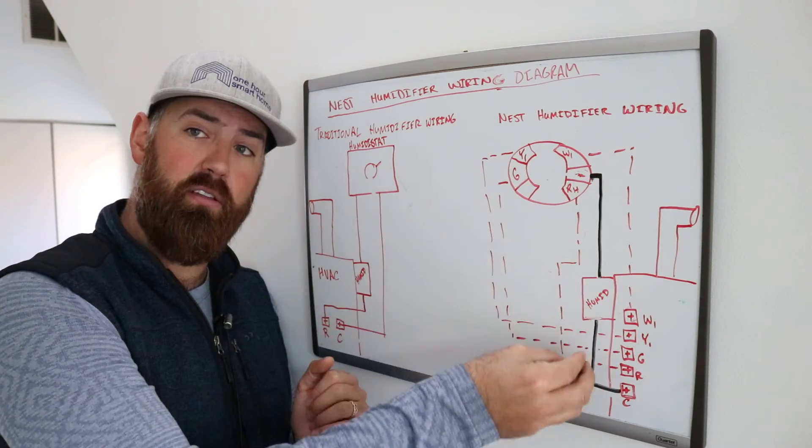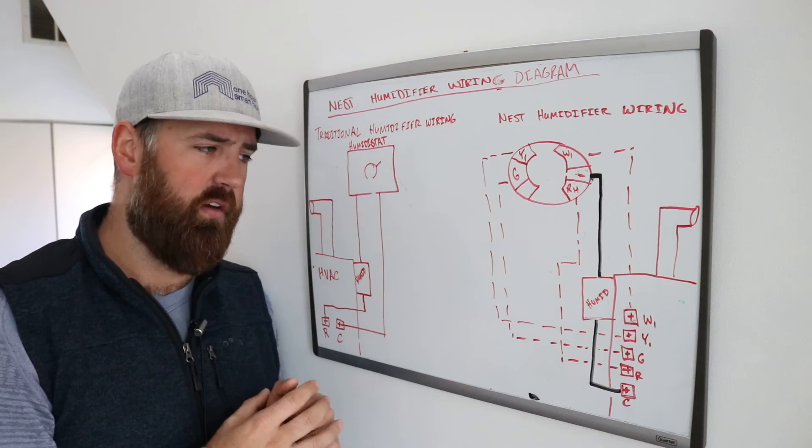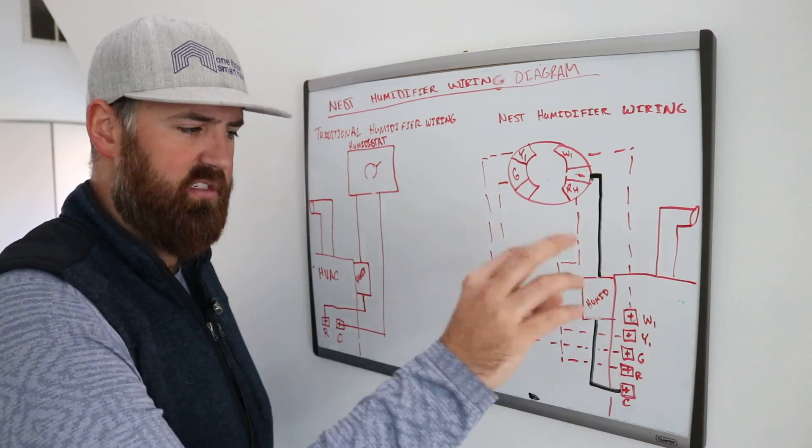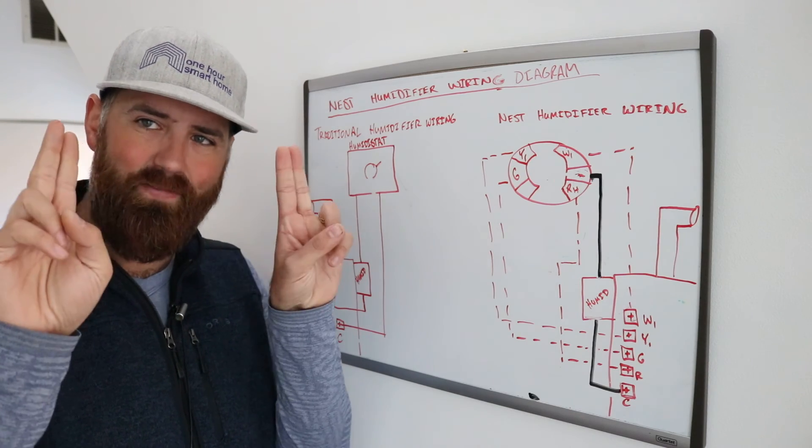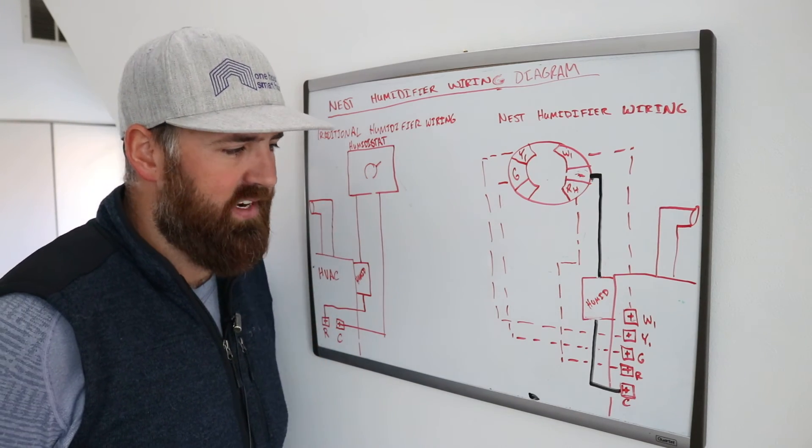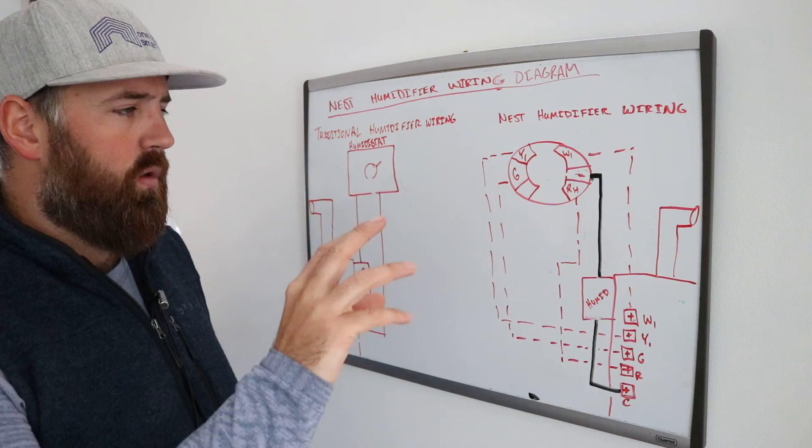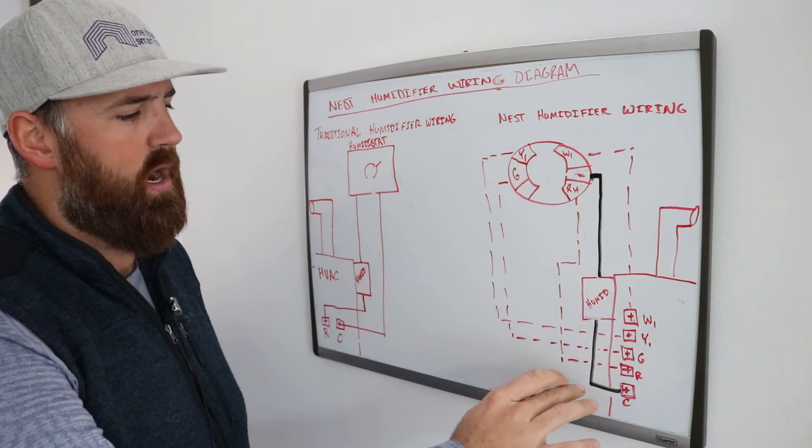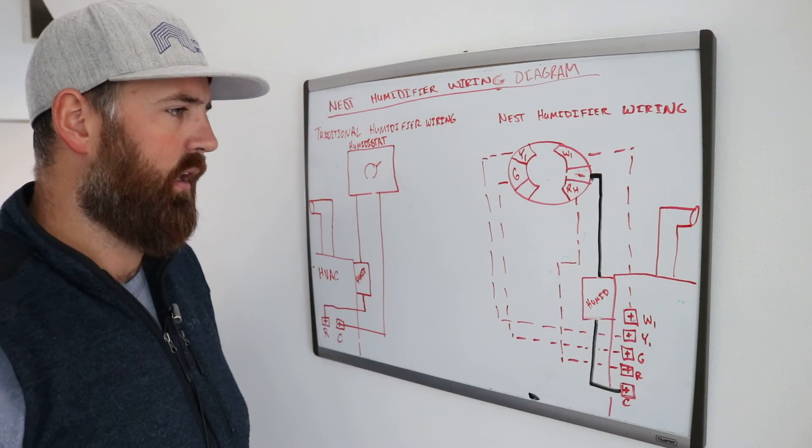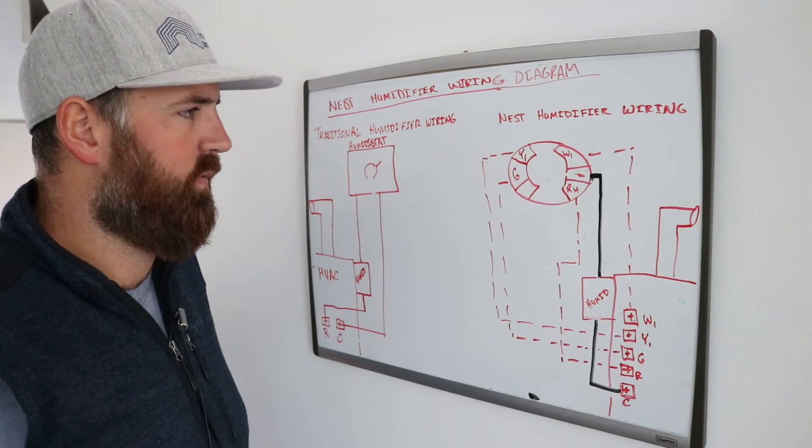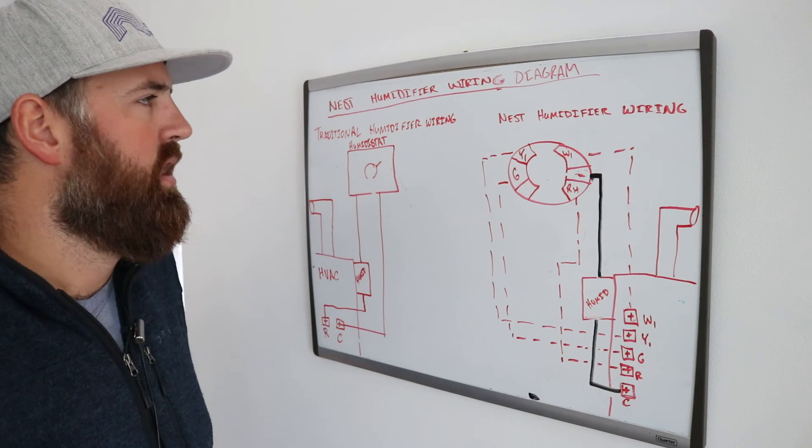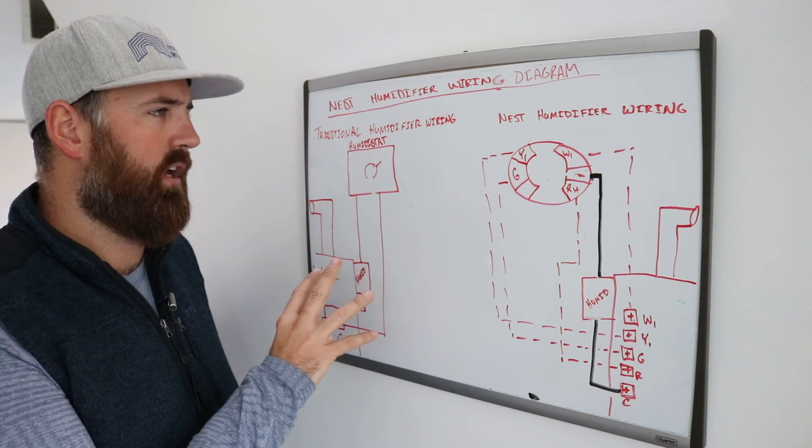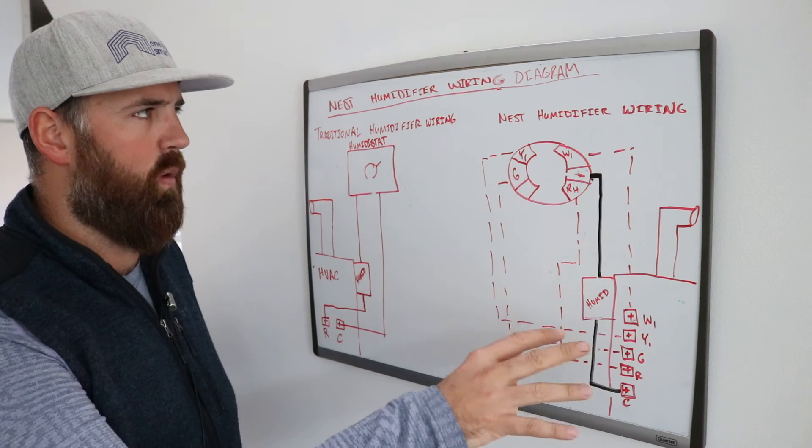It will activate something in line like a humidifier or a dehumidifier but it won't actually activate anything in the HVAC system because it's essentially similar to a neutral wire and that is how it works. So take a look at these wiring diagrams. This is the nest humidifier. We've got the wire that you need in black and the other ones in red dotted lines for how the thermostat would be connected. And this is a typical humidifier wiring diagram and the nest humidifier wiring diagram.